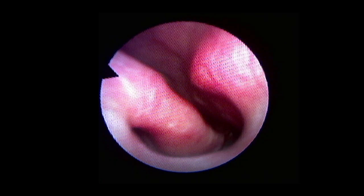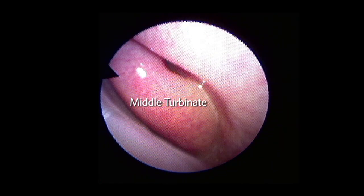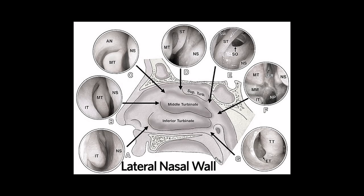As the flexible scope enters the right nasal cavity, one notices the nasal septum on the medial side and the inferior turbinate on the lateral side, and the middle turbinate on the lateral side. The lateral nasal wall is composed of the inferior, middle, and superior turbinates.